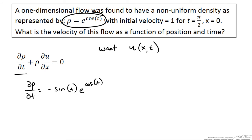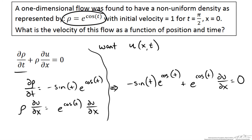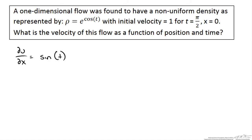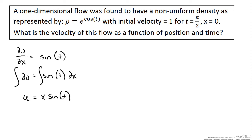The second part of the equation, rho times du/dx, is equal to e to the cosine of t times du/dx. We can combine these and set them equal to zero, then pull e to the cosine of t out of our equation and set that equal to zero. So we can cross out the exponential term, and we are left with du/dx equal to sine of t. Integrating both sides, we get u equal to sine of t times x plus some constant.